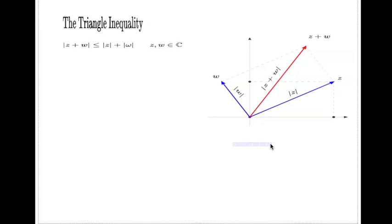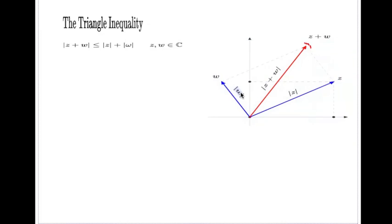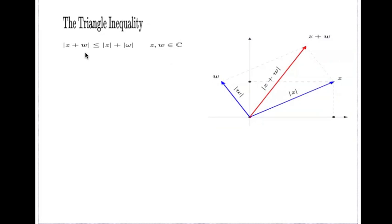The absolute value of z plus w is the length of this vector. From this diagram you can see why this inequality is called the triangle inequality — if you look at the triangle going from point O to the tip of vector w and to the tip of vector z plus w, that's a triangle. The sides have length |w|, the dashed side has length |z|, and this inequality tells you the length of the red side does not exceed the combined length of the other two sides.